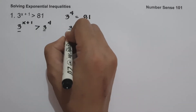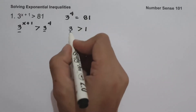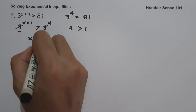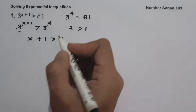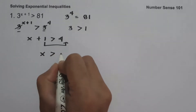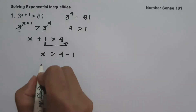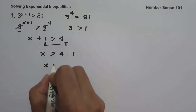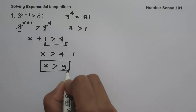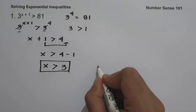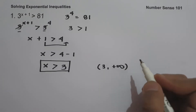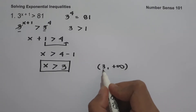Since the base 3 is greater than 1, the inequality symbol is retained. Canceling the base gives us x plus 1 greater than 4. Moving 1 to the other side gives x greater than 4 minus 1, which simplifies to x greater than 3. The solution set is (3, positive infinity), using parentheses because 3 is not included.